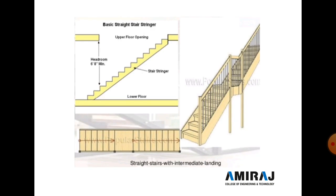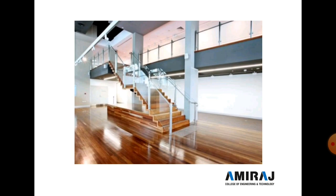As seen in the figure, steps are provided continuously. The second type of straight stair is the straight stair with landing. After a certain number of steps, a landing is provided. As seen in figure number two, a landing is provided after six steps, and then further steps continue. This represents a straight stair with landing.